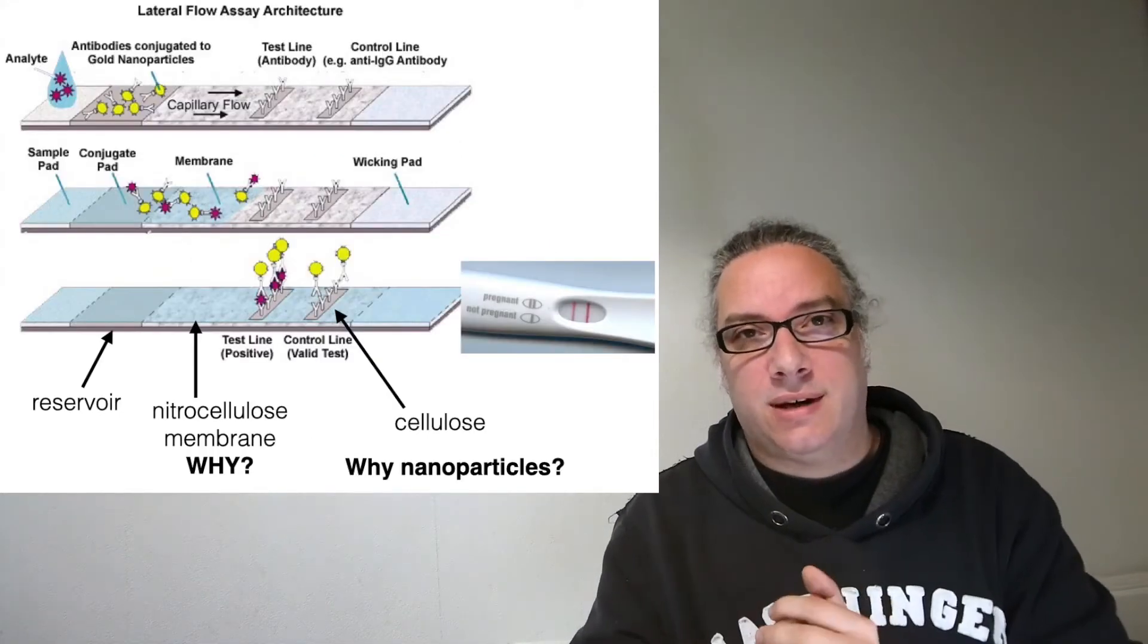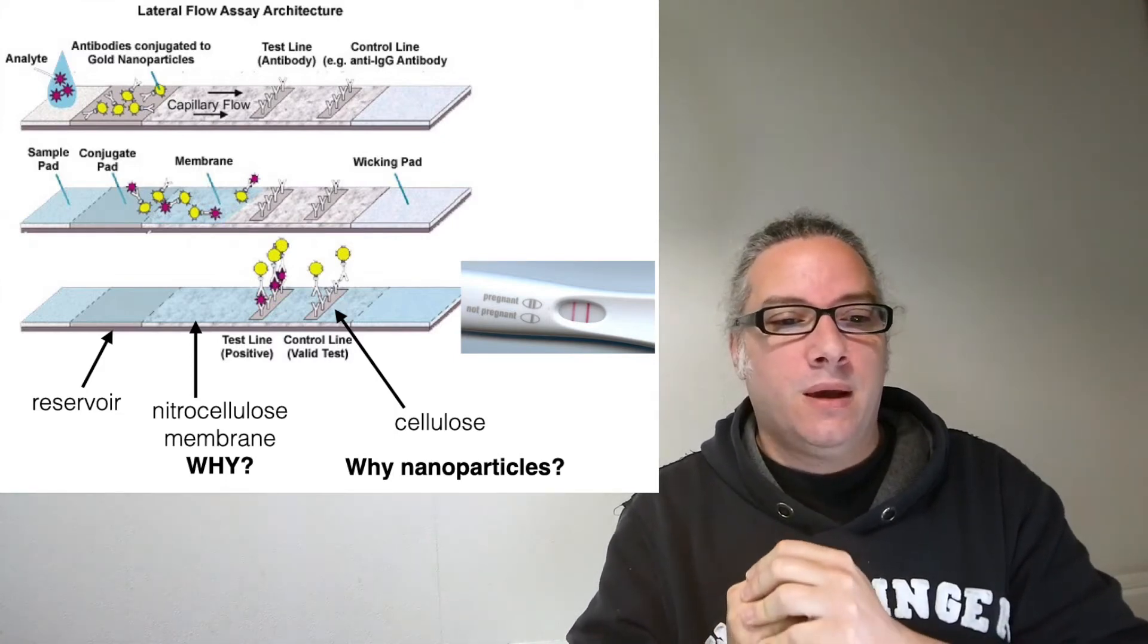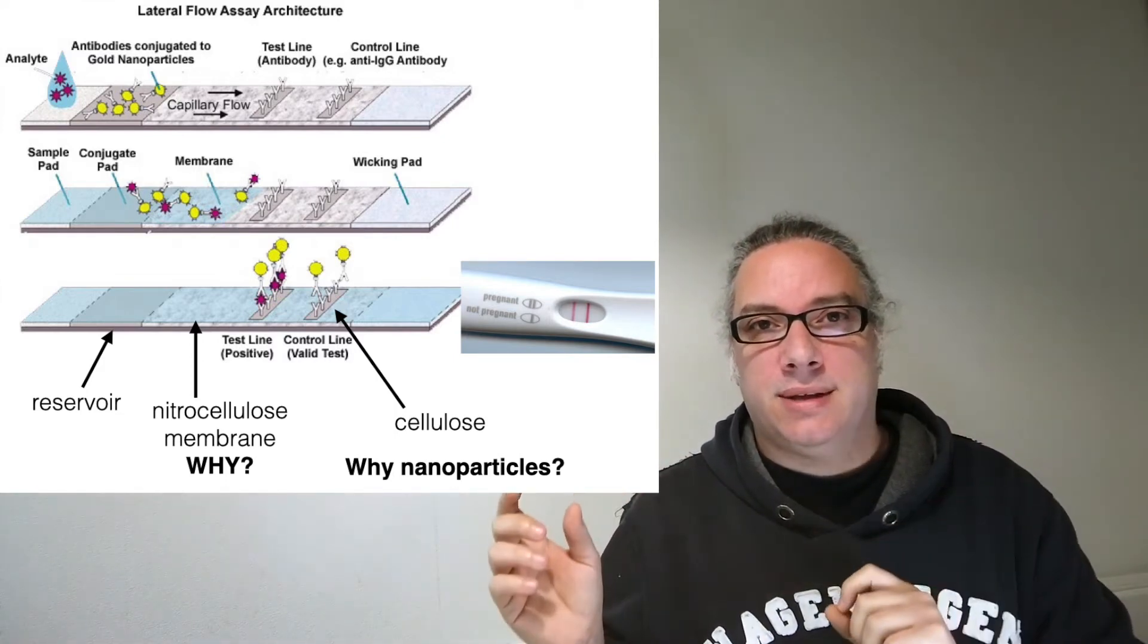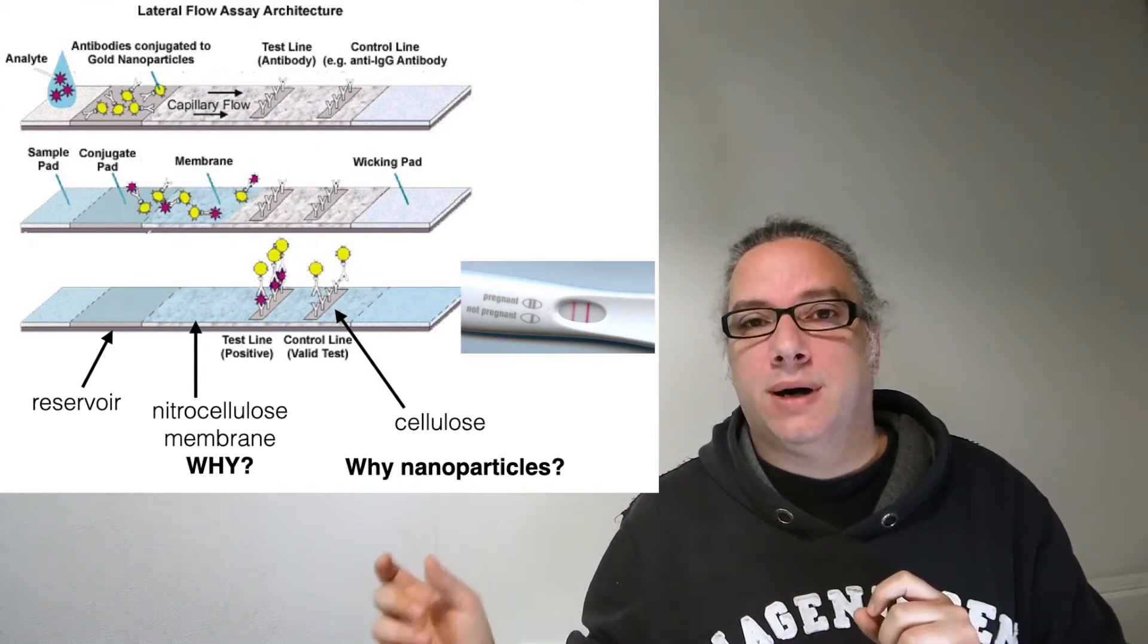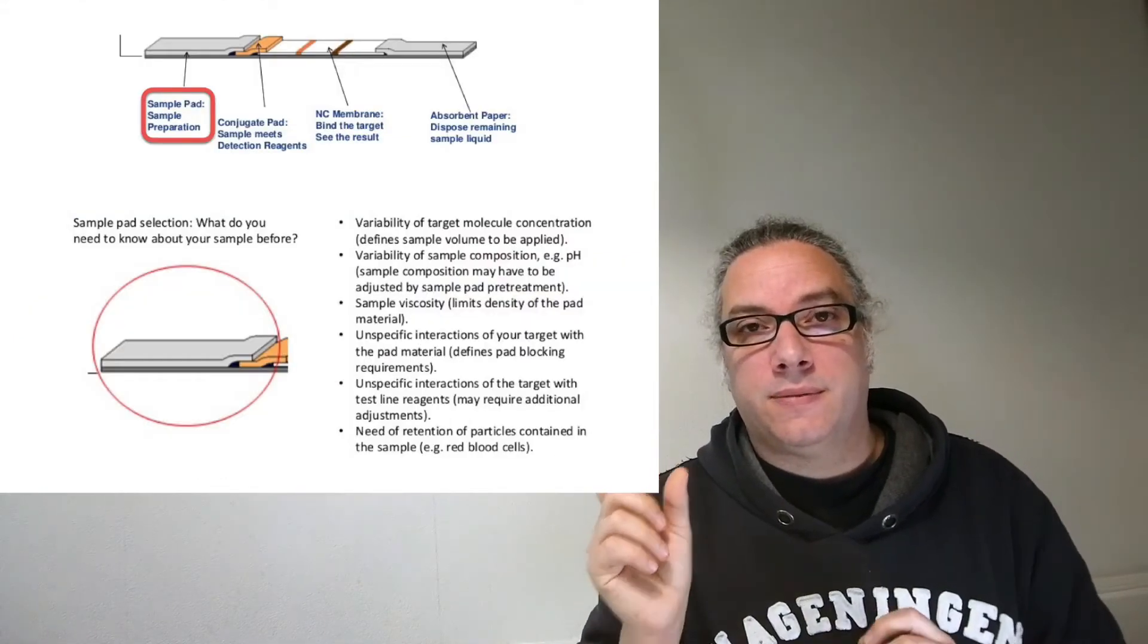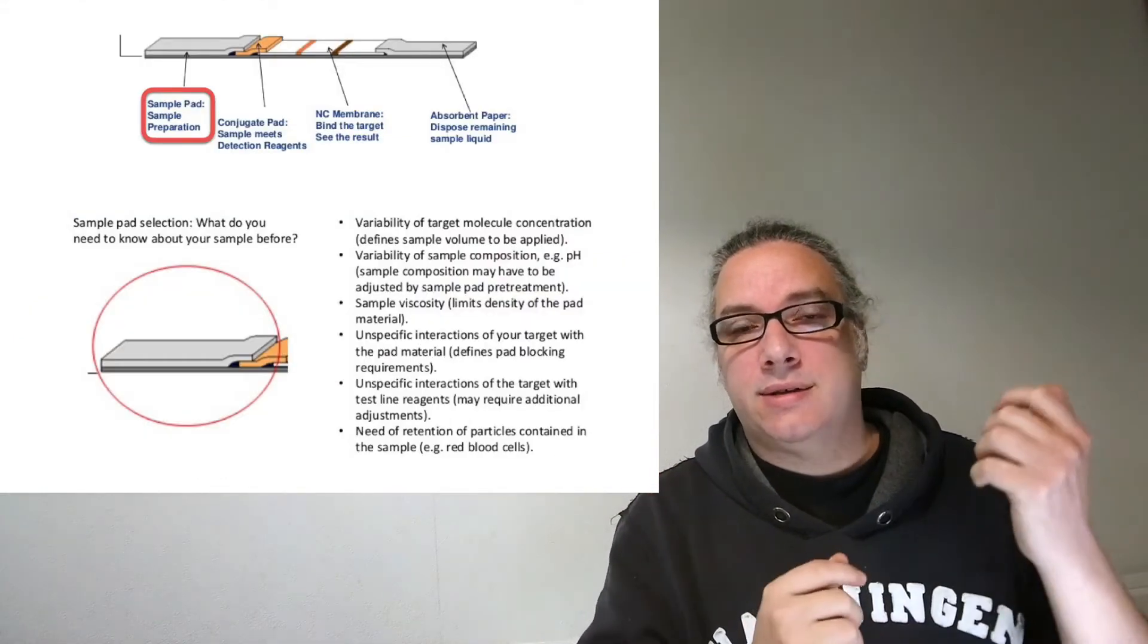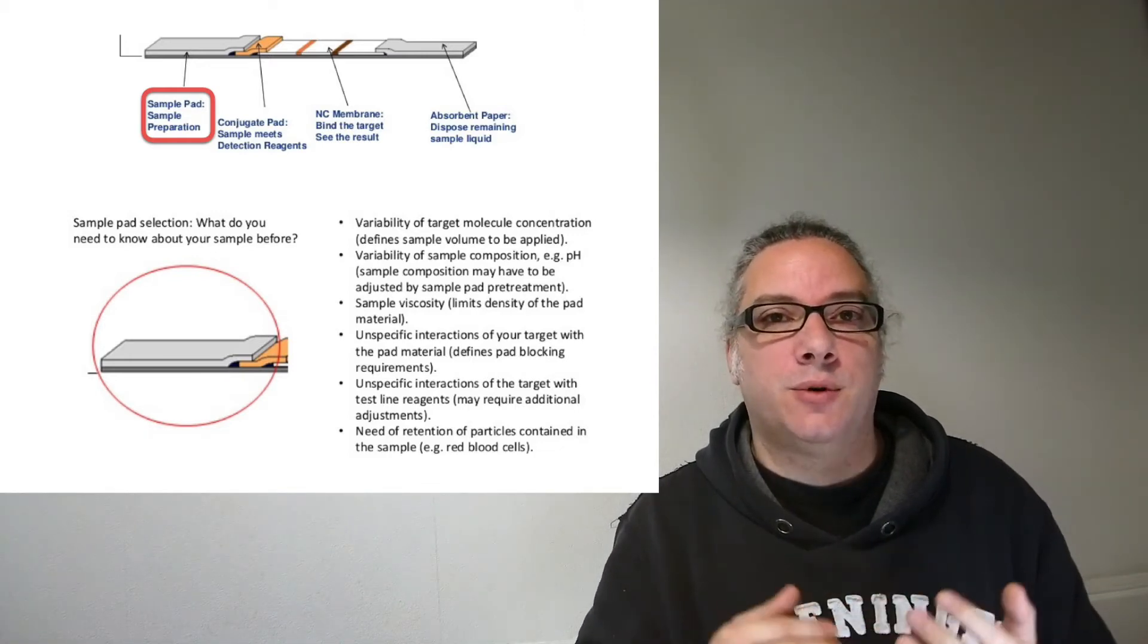Going back to the central question: how does the pregnancy test work? We have different parts in the lateral flow assay. The first part is the sample pad. This is where you put your analyte and liquid, and this is extremely important for sample pretreatment.